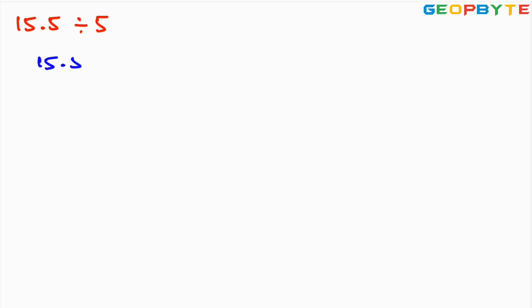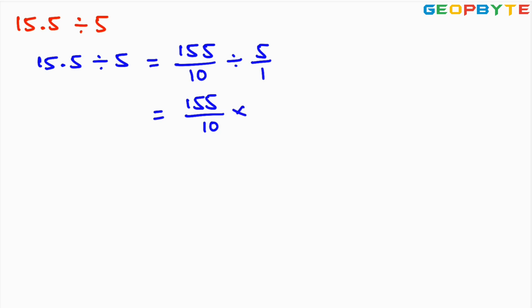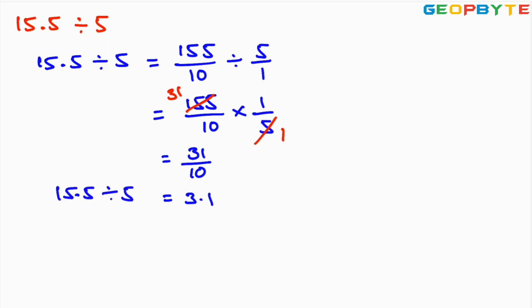Next: 15.5 divided by 5. We need to convert into fractions. So we get 155 by 10 divided by 5 by 1, which equals 155 by 10 into 1 by 5 — this is the reciprocal. Here 5 31s are 155, giving us 31 by 10. And 31 by 10 is 3.1. The result of 15.5 divided by 5 is 3.1.